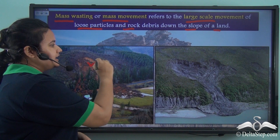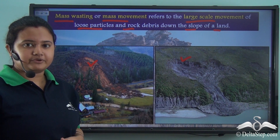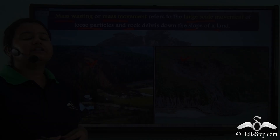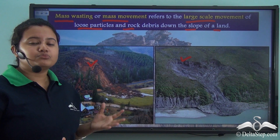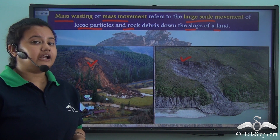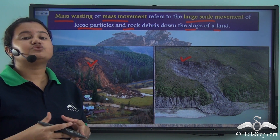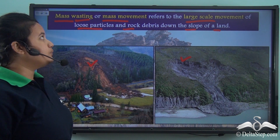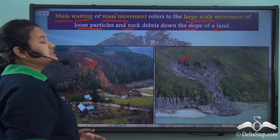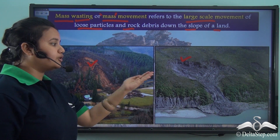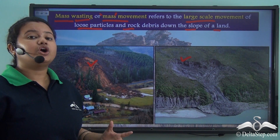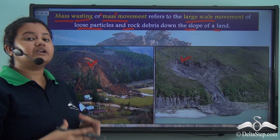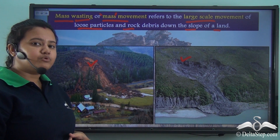This large scale movement of rock debris is called mass wasting primarily due to two reasons. The materials that move down are rock debris which we can consider as waste, so it is known as wasting. And why mass? Because the rock debris move down the slope of a hill in masses or collectively. Due to these two reasons this natural phenomena is called mass wasting or mass movement.